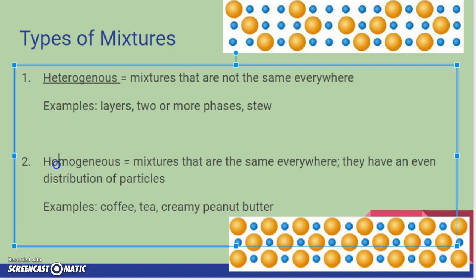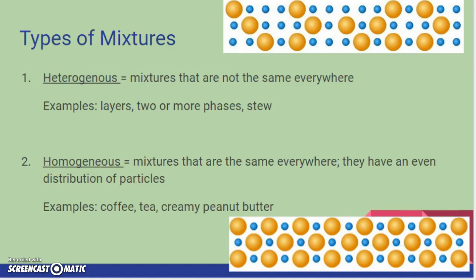The second type is homogeneous or homogenous. Homo meaning same. So again the same all over is going to help you remember. Hetero that word part means different. So homogeneous or homogenous mixtures are mixtures that are the same everywhere. They have an even distribution of particles. So for example coffee, tea, creamy peanut butter.